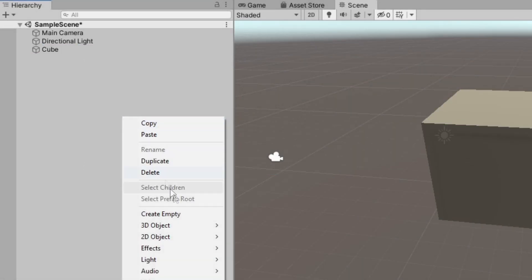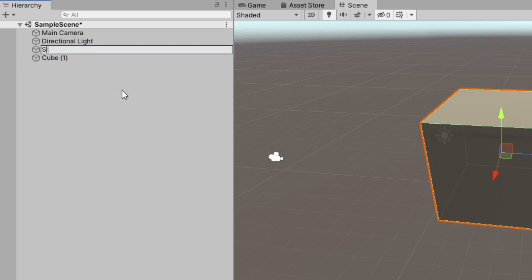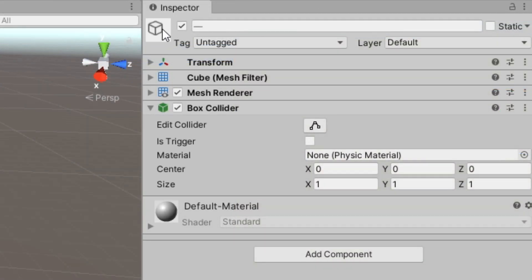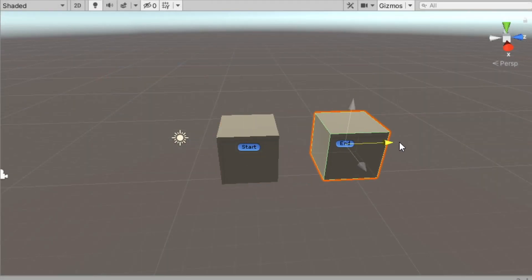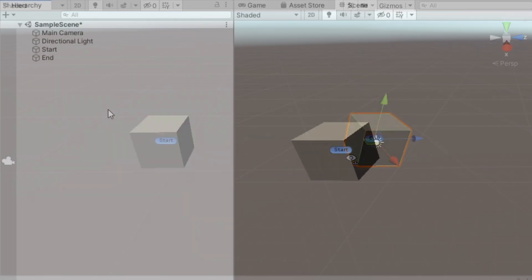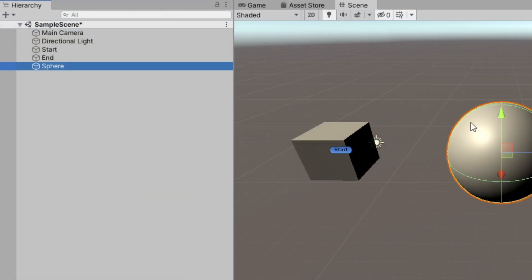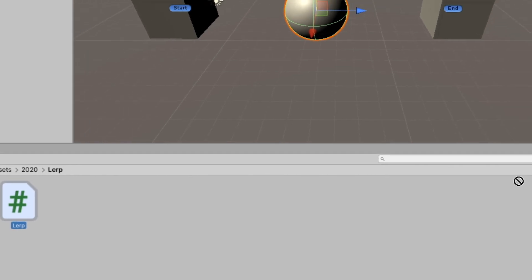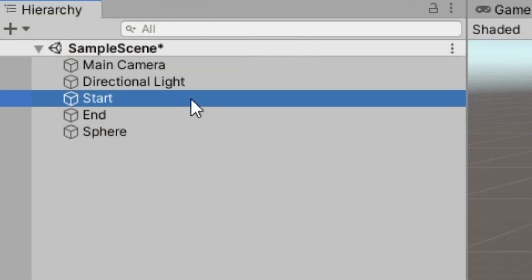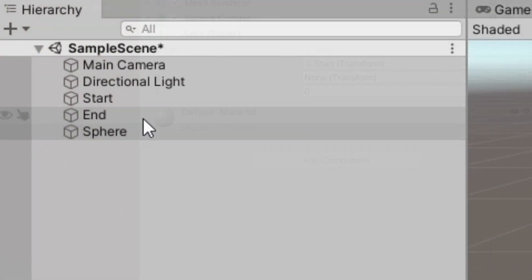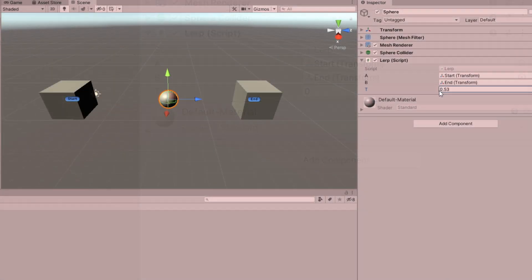Then we'll set up the start and end points in the scene as cube meshes. And we'll add a sphere, which will represent the point between them. Attach the LERP script to the sphere. Drag the start and end point cubes into the A and B slots of the LERP script. When you enter play mode, you'll find that by adjusting the value of T on the LERP script, it allows you to move the sphere between the start and end points.